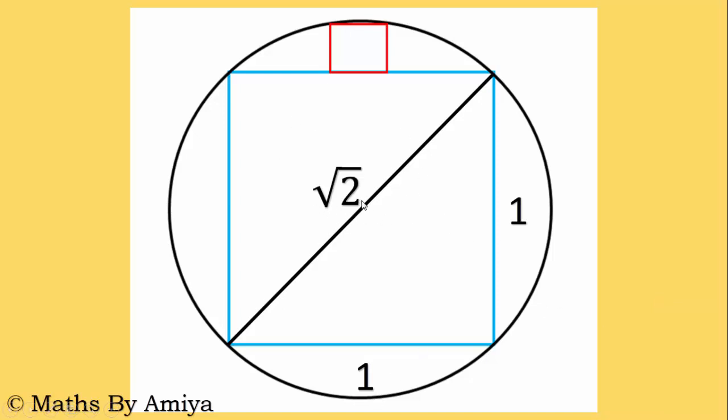Since diameter is root 2, we can say the radius is root 2 by 2, that is 1 by root 2. So I will draw the line OM. Assume OM is the radius. The value of OM is 1 by root 2, half of the diameter.